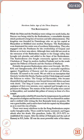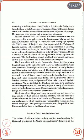Amoghavarsha ruled for 64 years but by temperament preferred the pursuit of religion and literature to war. He was himself an author and is credited with writing the first Kannada book on poetics. He is said to have built the capital city Manyakhet to excel the city of Indra. There were many rebellions in the far-flung Rashtrakuta Empire under Amoghavarsha, which could barely be contained and began afresh after his death. His grandson Indra III (915–927) re-established the empire. After the defeat of Mahipala and the sack of Kannauj in 915, Indra III became the most powerful ruler of his time. According to Al Masudi, the Rashtrakuta king — called 'Balhara' or 'Vallabha Raja' — was the greatest king of India, and most Indian rulers accepted his sovereignty.